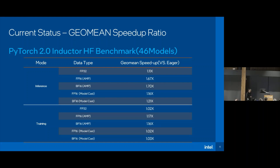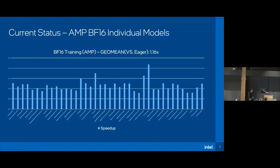Currently we are focusing on the auto-mix precision mode. The performance is promising and we will continuously optimize other scenarios. This slide shows individual model performance. Some models show impressive results, but we also noticed that some model performance is not as good as eager mode. The outlier portion — where the speedup ratio is less than one — for BFloat16 training auto-mix precision mode is about 28%.